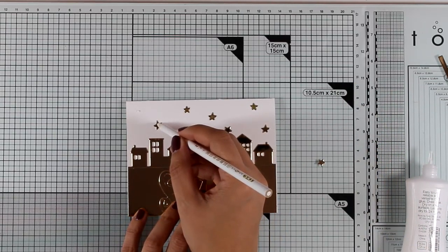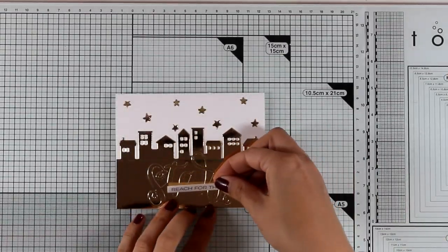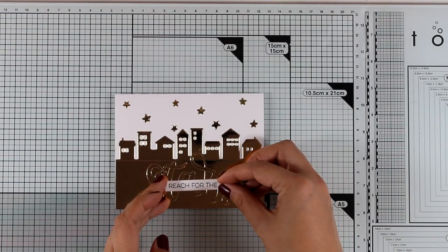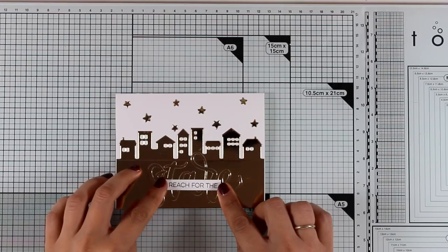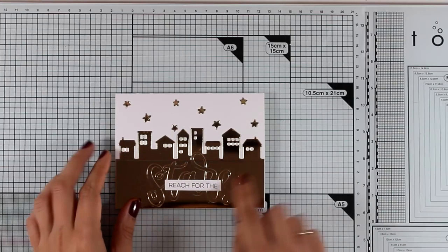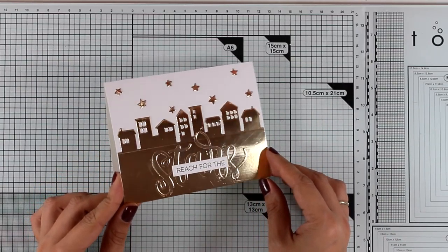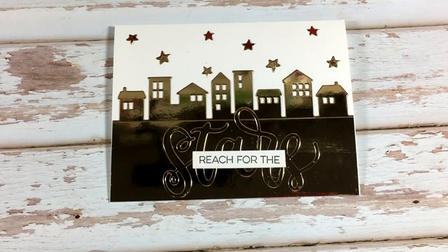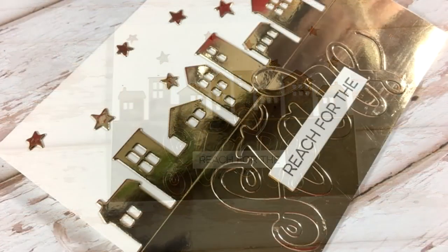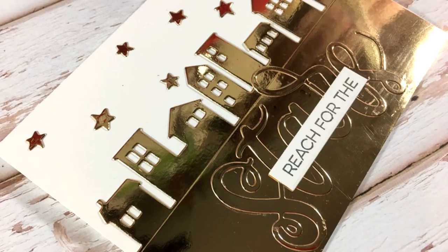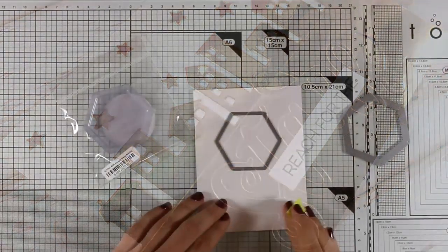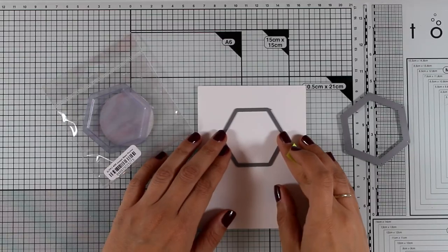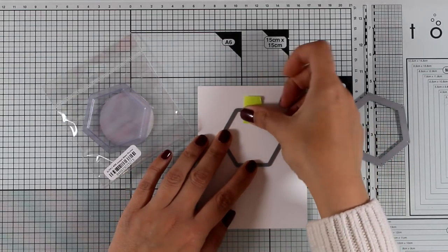Now to finish off the card I'm going to complete the sentiment by stamping 'reach for the' on a piece of white cardstock and just stick it on top of the word 'stars'. The sentiment comes from the 'written in the stars' stamp set. Now it's really difficult to photograph a mirrored card just because it reflects everything including my camera and everything in the surroundings. So now let's move on to the next card.